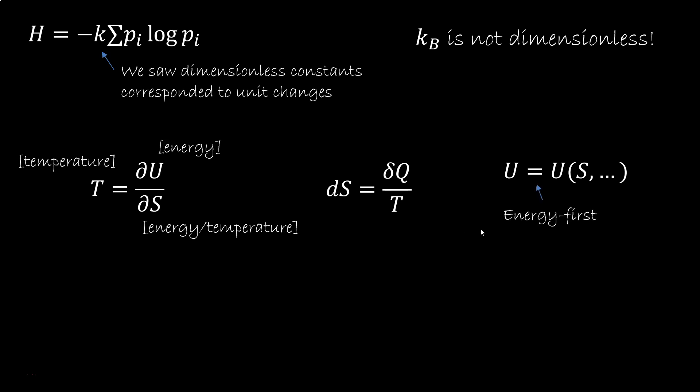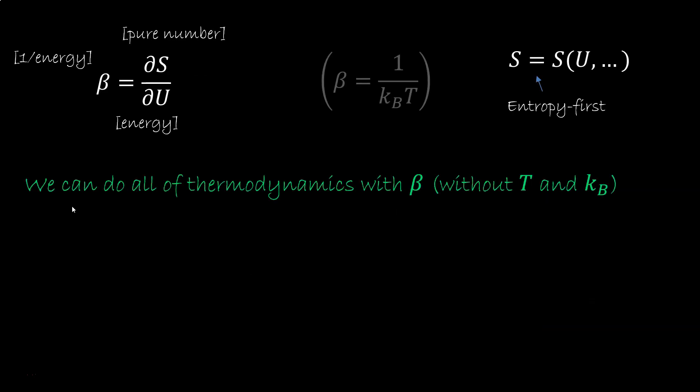This picture is called energy first, and is not the only way to do it. We can express the equation of state in terms of the entropy, so we have entropy first. In this picture we typically leave S as a pure number, and define beta as the derivative of the entropy with respect to the energy. So beta must be 1 over energy. In case we want temperature, we have beta equals 1 over KbT. But this is, in a sense, optional. The point is that you can do all of thermodynamics with beta, without T and Kb.